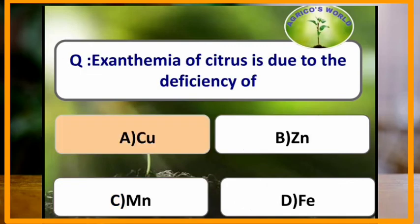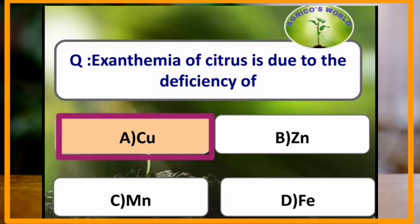Exanthema of citrus is due to the deficiency of which element? Exanthema of citrus is due to the deficiency of copper.